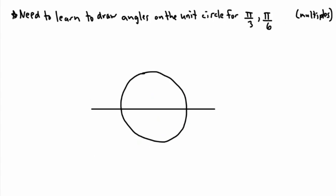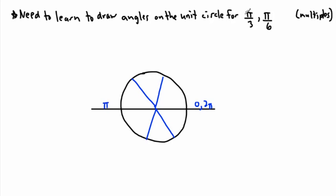The harder ones are where we go over three or over six. We need to learn how to draw angles on the unit circle for pi over three and pi over six. This over here is zero, but it's also two pi, and all the way around to the left side must be just pi radians. If you want pi over three, you take the top part and divide it into three equal parts — like cutting pizza. If I wanted six slices, I'd make three slices: one through the middle and one on each side. That gives three even pieces to get to pi, and a third of that is pi over three.